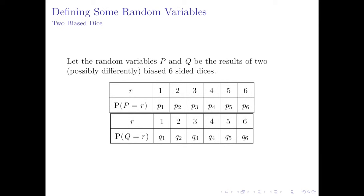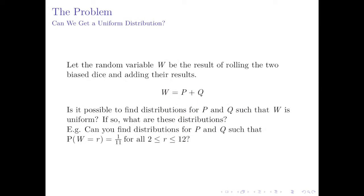So now let's look at a specific problem. We'll let the random variables p and q be the result of rolling two possibly differently biased six-sided dice — so no longer is it true that the probability of rolling a six equals rolling a three. p(6) and p(3) don't have to be equal, and similarly for q. These are two different distributions. We let the random variable w be the result of rolling the two biased dice and adding their results, so w = p + q. What we want to know is: can we find distributions for p and q such that w is uniform — that is, the probability that w equals r equals one over 11 for all r from 2 to 12? It would be one over 11 because there are 11 possible outcomes, and we want them all equally likely.